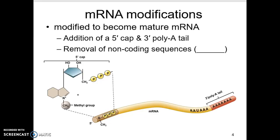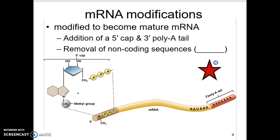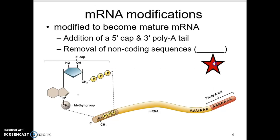What we'll see happen is the RNA strand transcribed from the DNA gets modified into what's called mature mRNA. The modification involves adding caps to it — little hats, if you want to call it that. There's a 5' cap that goes on one end and a 3' tail, called the poly-A tail, because it's a bunch of adenines. That gets added to the RNA strand.